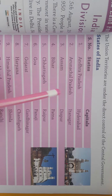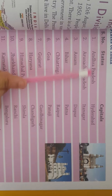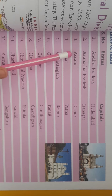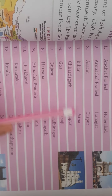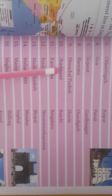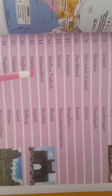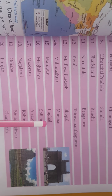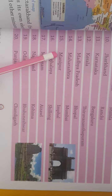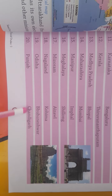The union territories are under the direct control of the central government. Now, states and their capitals: Madhya Pradesh — Bhopal, Maharashtra — Mumbai, Manipur — Imphal, Meghalaya — Shillong, Mizoram — Aizawl, Nagaland — Kohima, Odisha — Bhubaneswar, Punjab — Chandigarh.